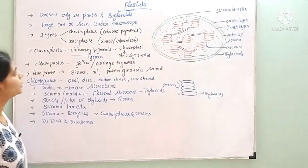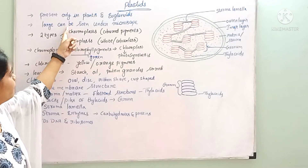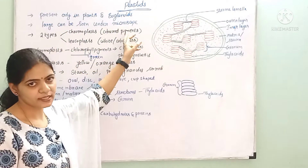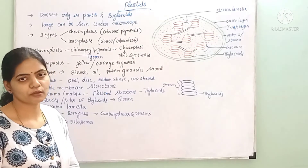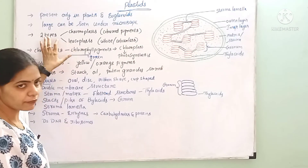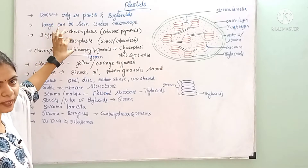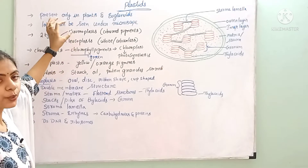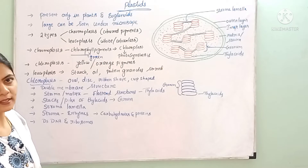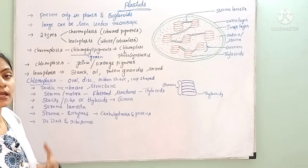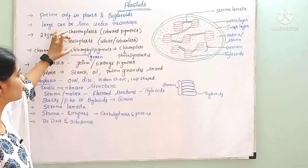And these plastics are very large in size, and they can be seen under the light microscope also. And plastics are only two types — we have chromoplasts and leucoplasts. Chromoplasts are colored pigments. Colorless and white colors are leucoplasts.